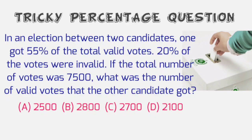The question is, in an election between two candidates, one got 55% of the total valid votes. 20% of the votes were invalid. If the total number of votes was 7,500, what was the number of valid votes that the other candidate got?